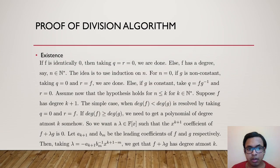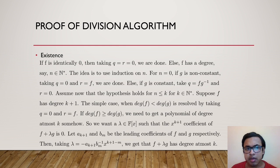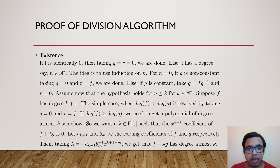The proof of the division algorithm: first deal with the special case when f is identically 0 — take q = r = 0. Otherwise f has degree n ∈ ℕ∪{0} and we use induction on n. For n = 0, f is a constant polynomial. If g is non-constant, the degree of f is already less than the degree of g, so take q = 0 and r = f. If g is a constant, take q = f·g⁻¹ and r = 0.